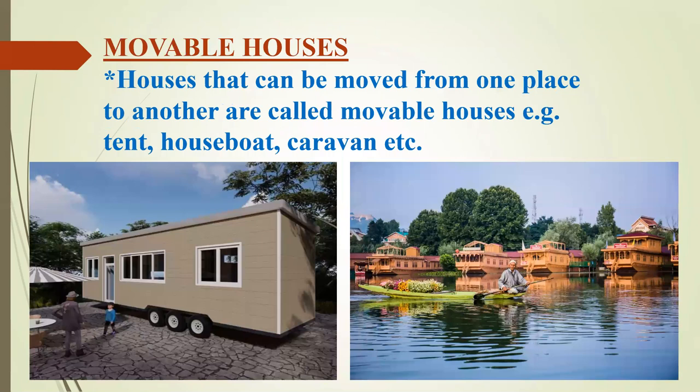Moveable houses. Houses that can be moved from one place to another are called movable houses. For example, tent, houseboat and caravan.